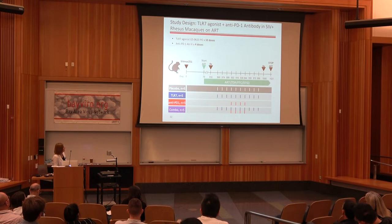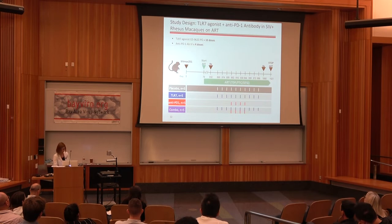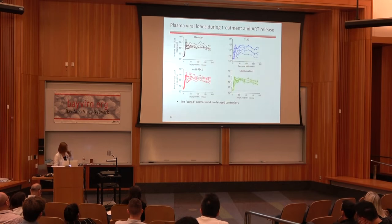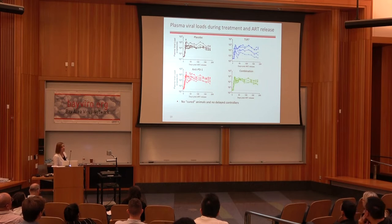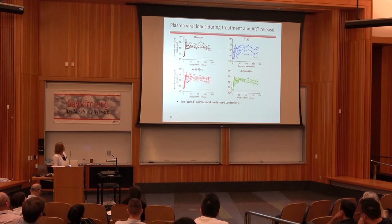On bookends of the study we took tissue biopsies to look at the size of the reservoir and see if we made a difference there. At the end of the study, we released ART and again looked at viral rebound kinetics. In all four treatment groups, all five animals rebounded within about two weeks of stopping ART, suggesting there is really no efficacy in terms of viral reservoirs or immune control.